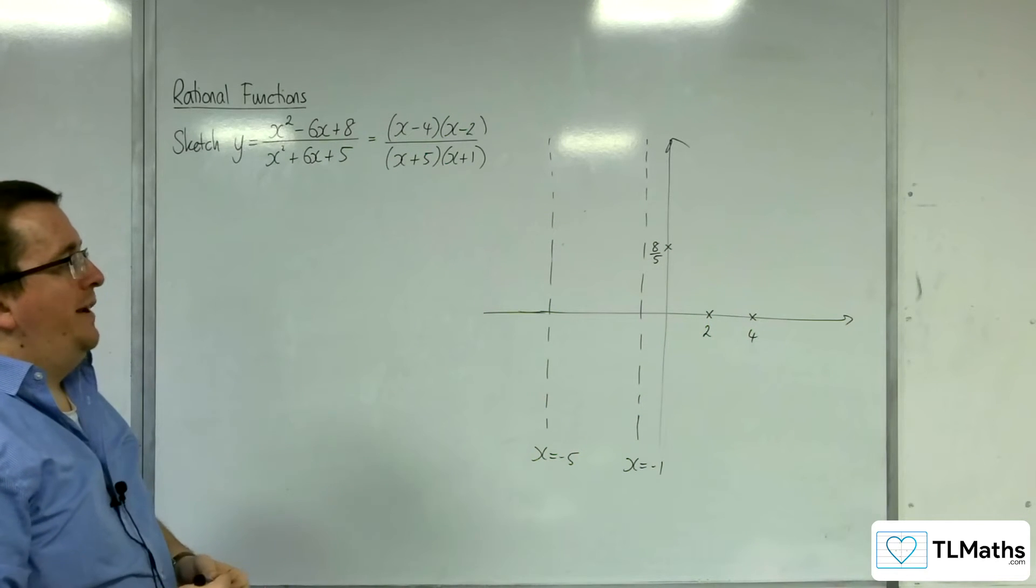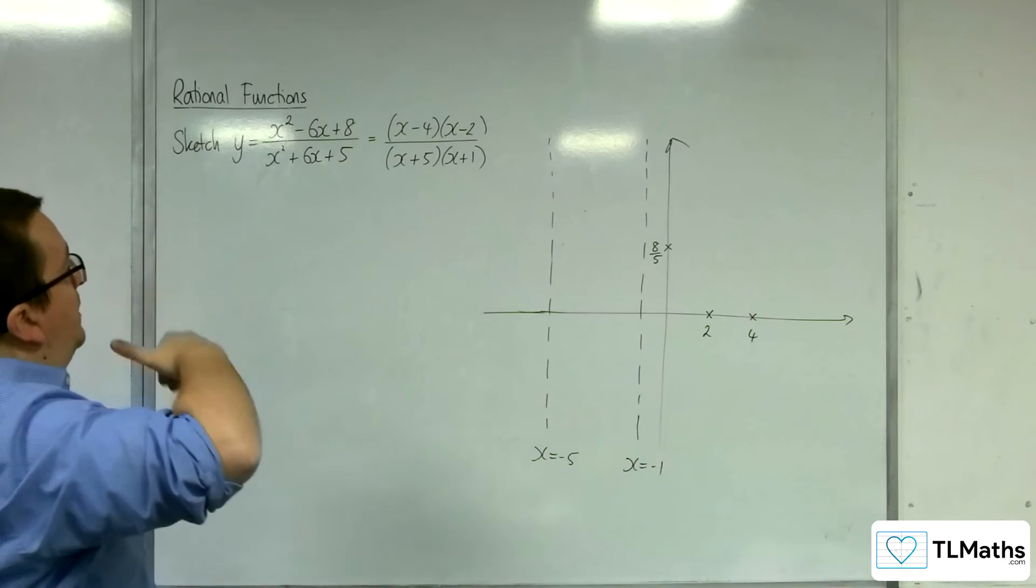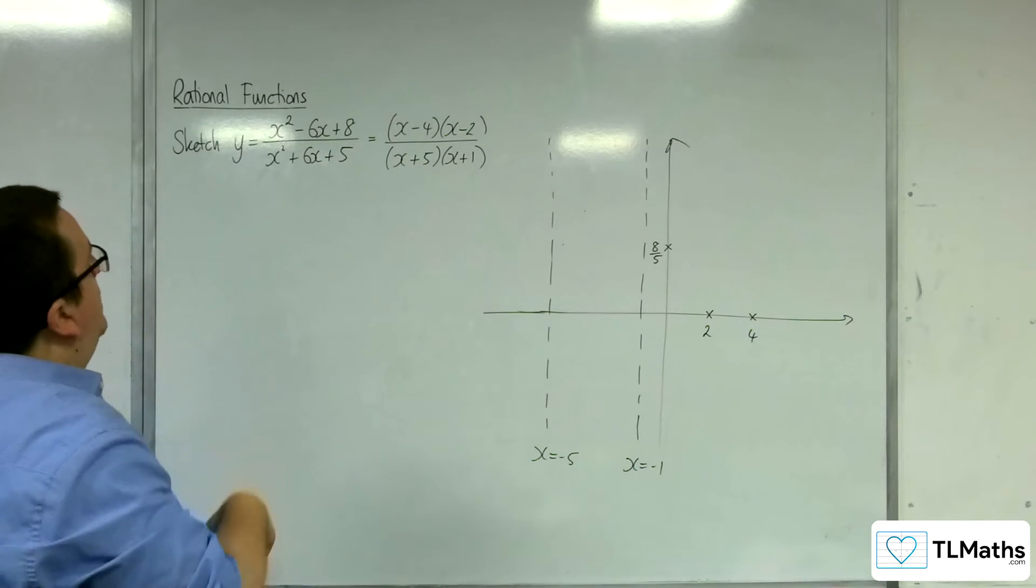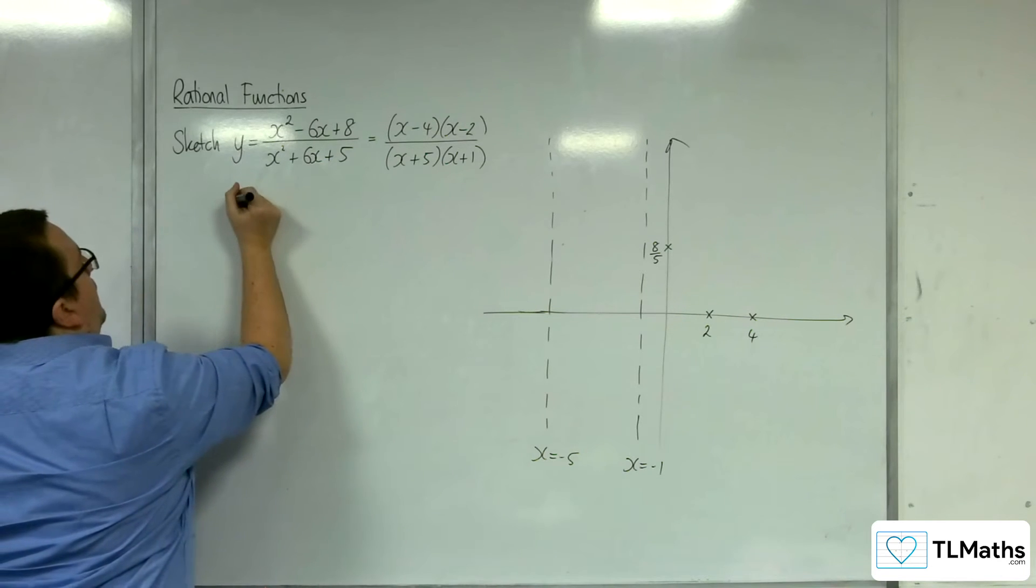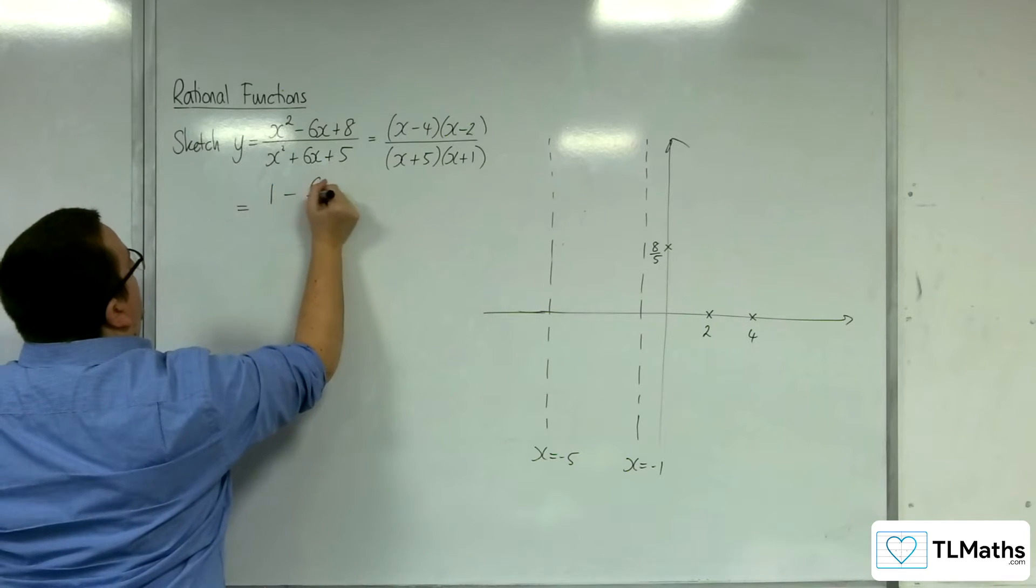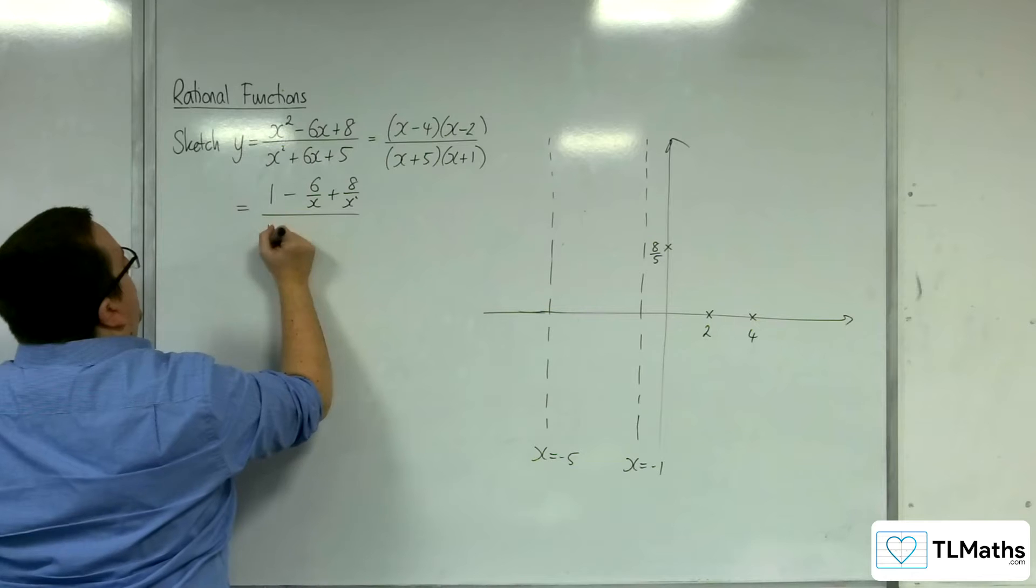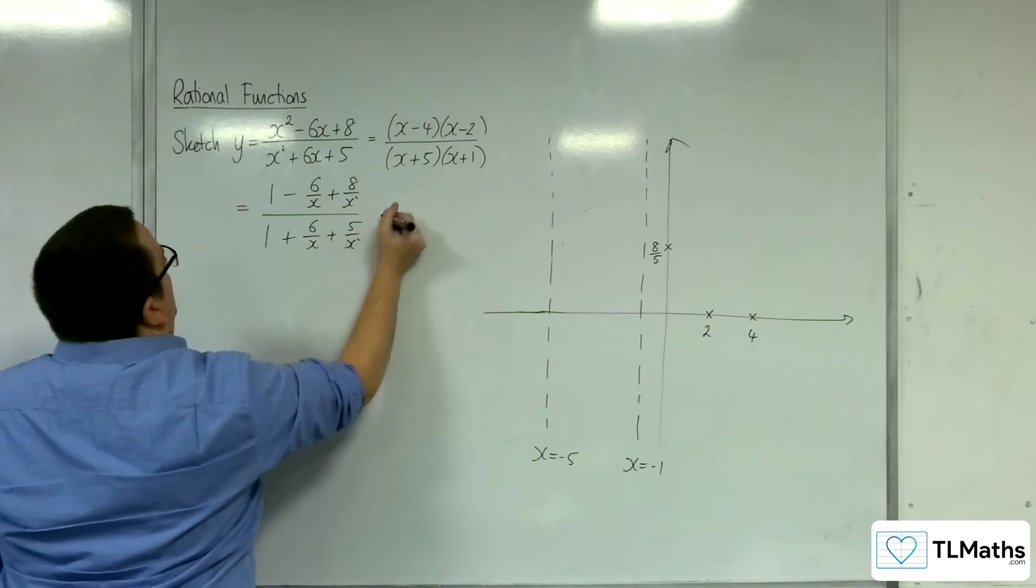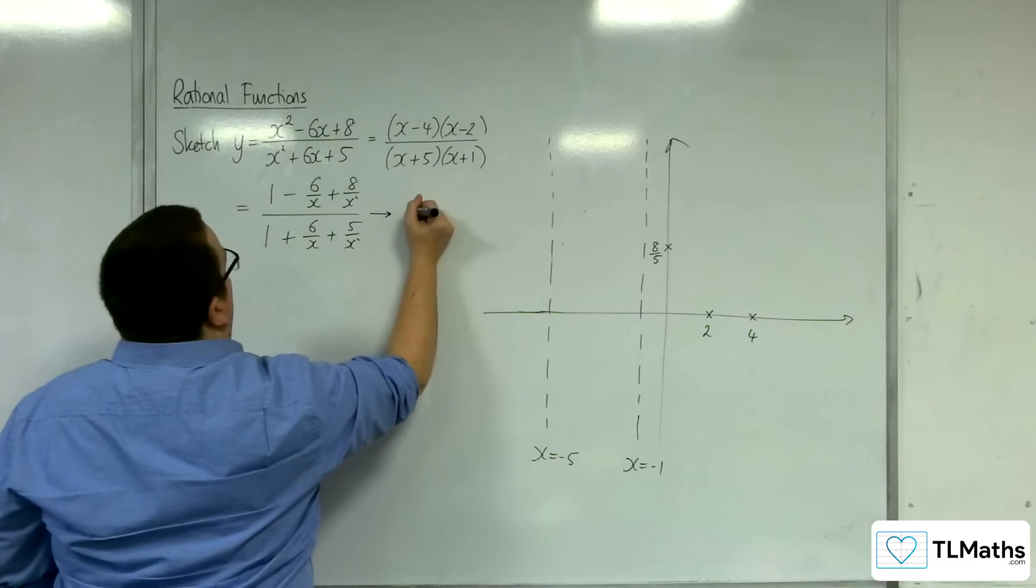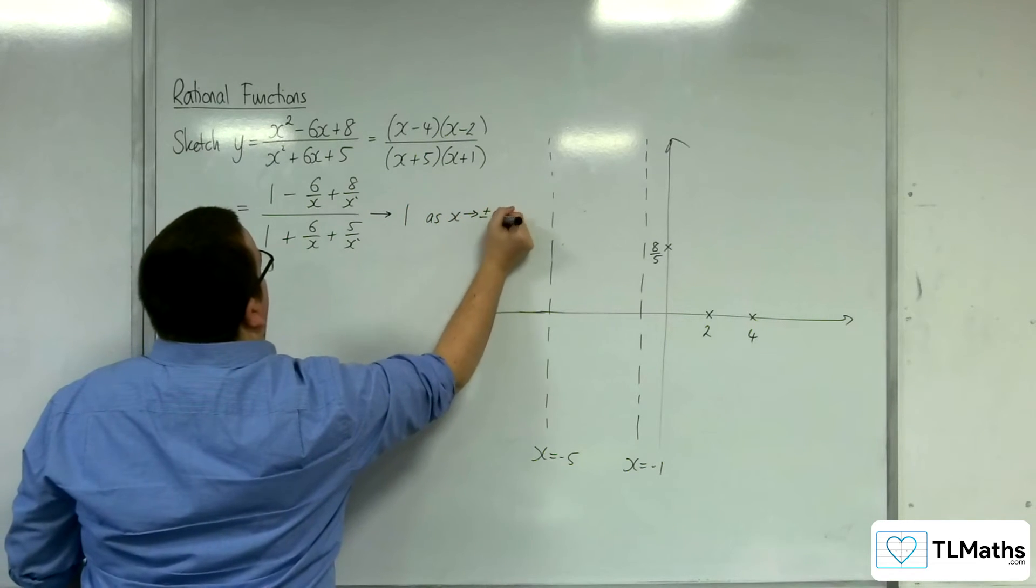And horizontal asymptotes. Well, the order of the numerator and the denominator for polynomials are the same, so we are going to have a horizontal asymptote. If I divide through by x squared: 1 take away 6 over x plus 8 over x squared, over 1 plus 6 over x plus 5 over x squared. Well, this will tend to 1 over 1 as x tends to positive or negative infinity.